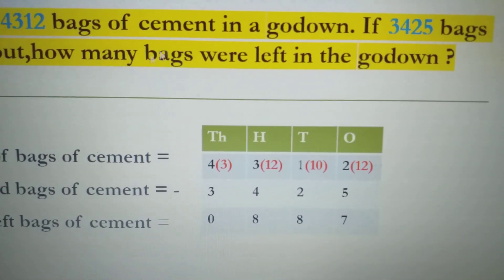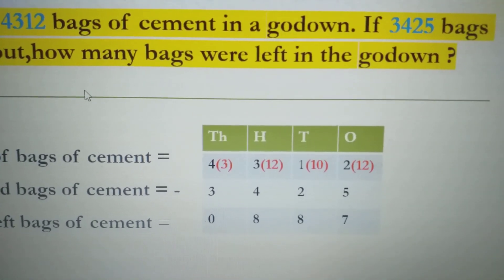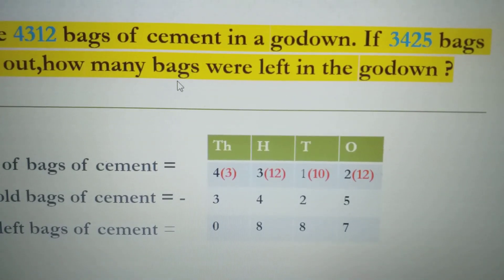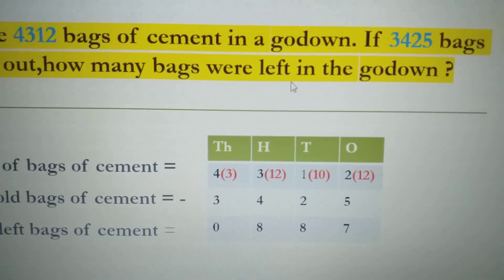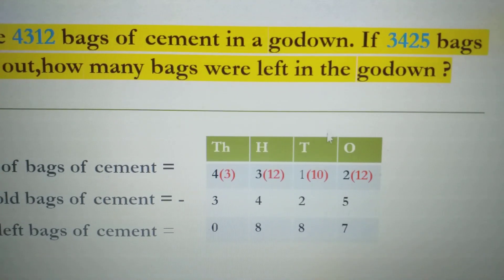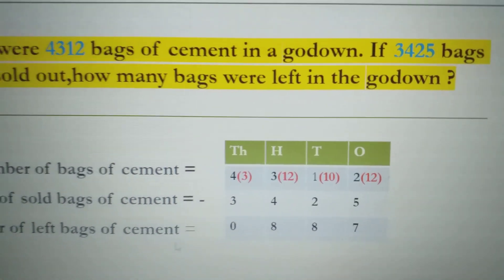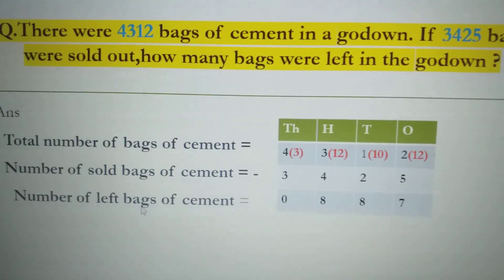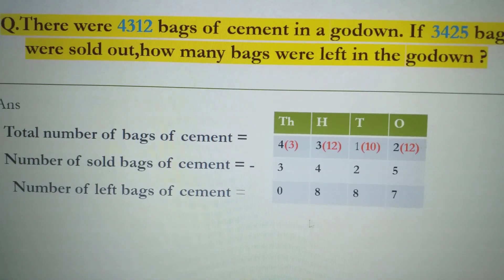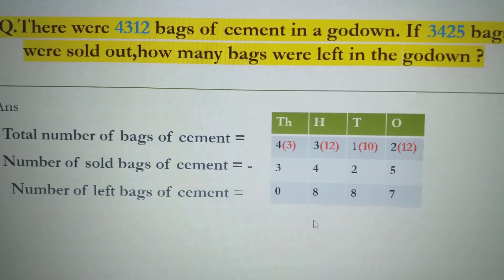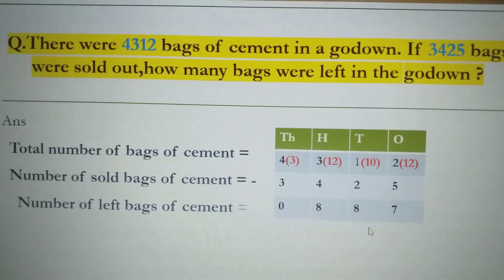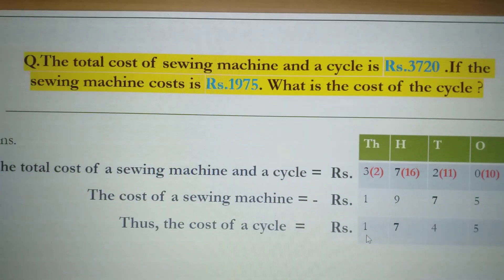According to the question, we have to find out the number of bags left. The number of left bags of cement is 887. Now, move to the next question.